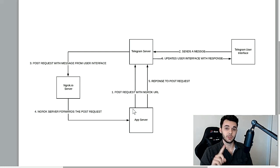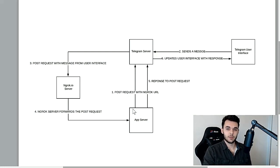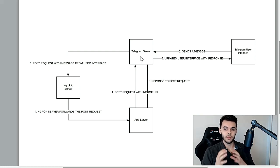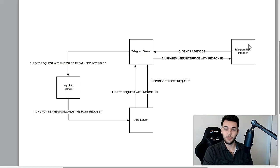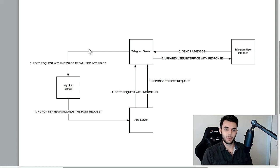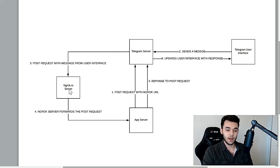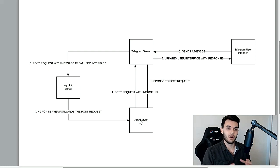So step one should really be: start the ngrok server. Step two: start the app server. The app server sends a POST request to the Telegram servers with the ngrok URL. Now the Telegram servers know that when we get a message from the user interface, to post that message update — that event — to the ngrok server we spun up locally. And then that ngrok server is going to forward that request to the endpoint we specified on our local machine.